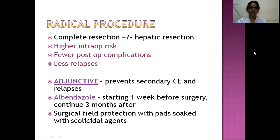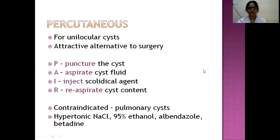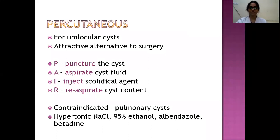For radical surgery, adjunctive albendazole should be given starting one week before surgery and continued for three months after, to prevent secondary cystic echinococcosis and relapses. Surgical fields should be protected with pads soaked in scolicidal agents. Percutaneous treatment for unilocular cysts uses the PAIR procedure — Puncture, Aspiration, Injection of scolicidal agent, Re-aspiration. This is contraindicated for pulmonary cysts due to risk of anaphylaxis and pneumothorax. Scolicidal agents used include hypertonic saline, 95% ethanol, albendazole, and betadine.